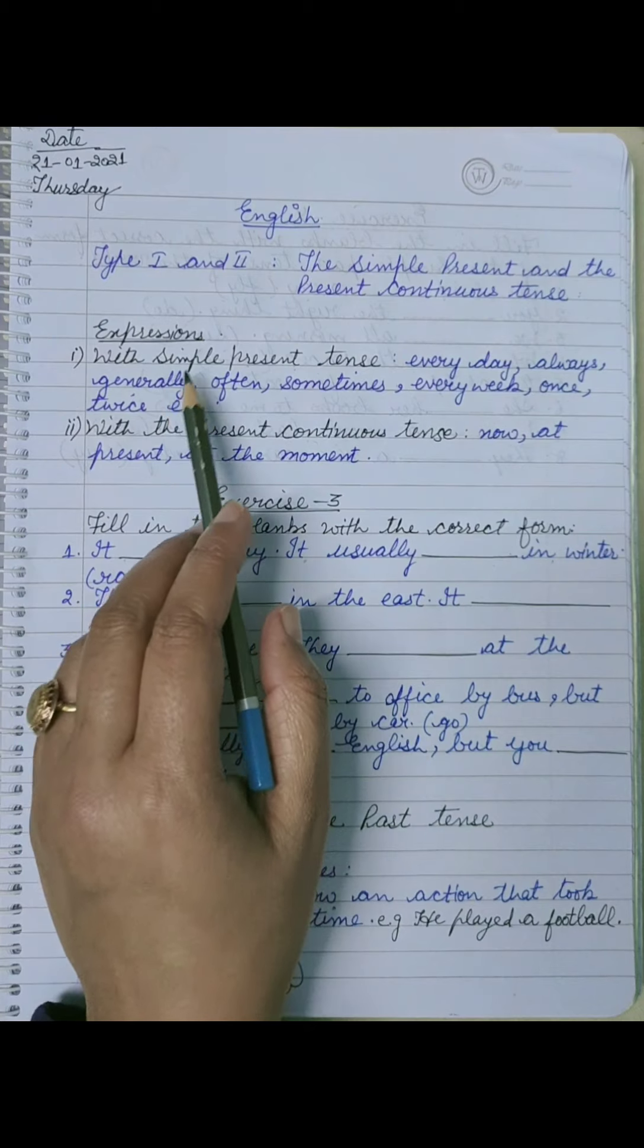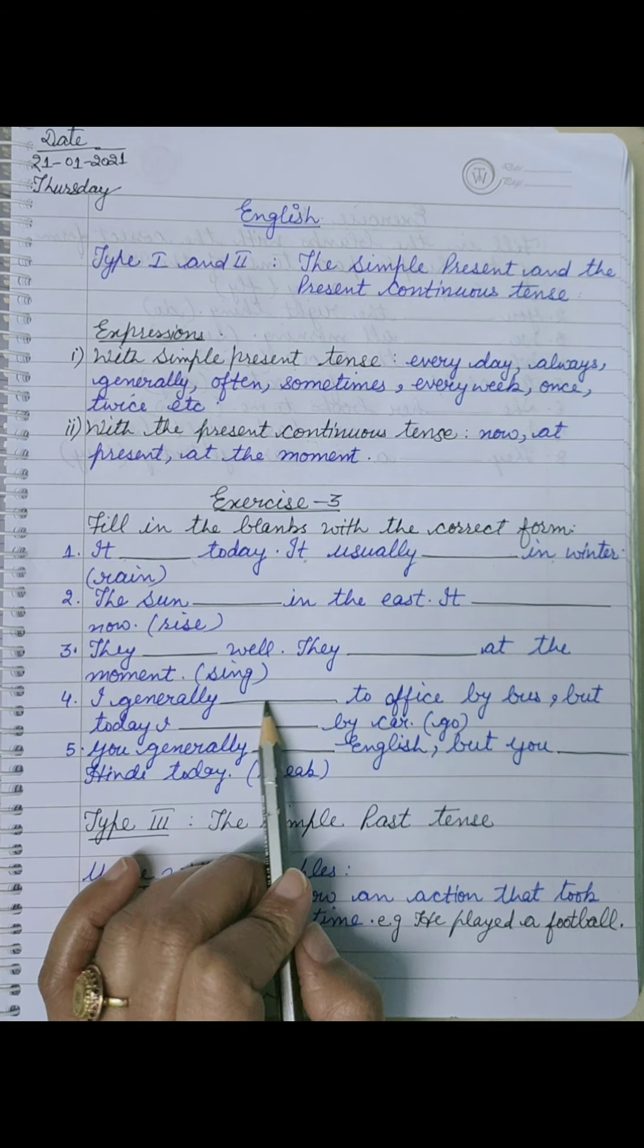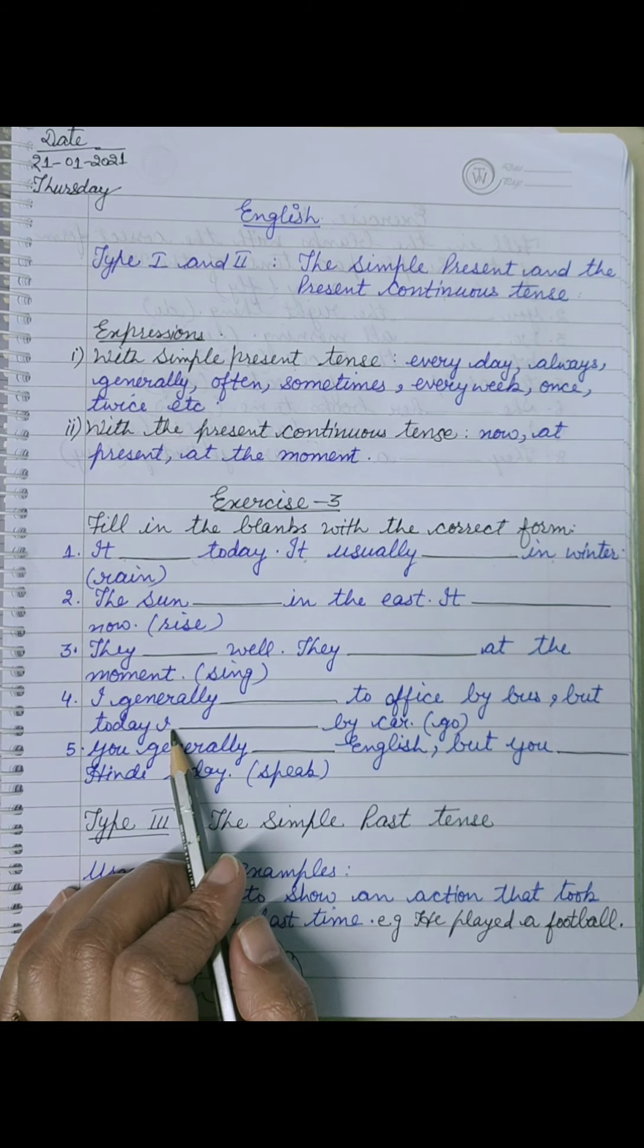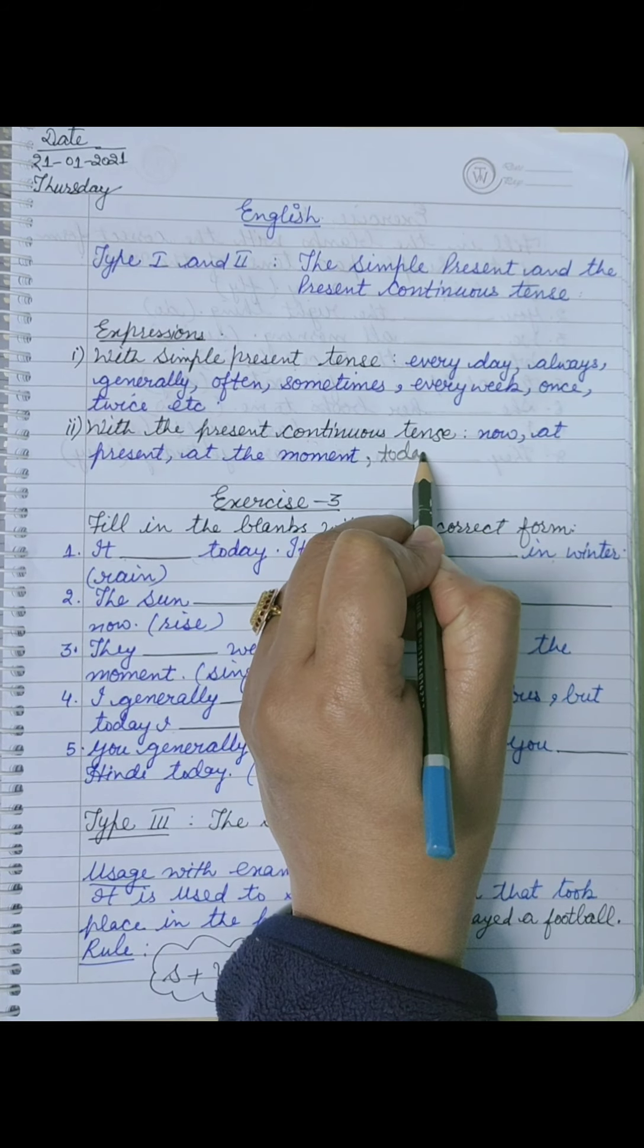Next is I generally dash to office. Generally कहां पर use किया, simple present - I generally go to office by bus. But today, today जहां use होता है तब क्या use करेंगे हम, present continuous tense.